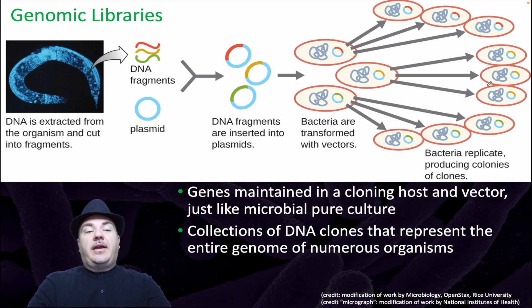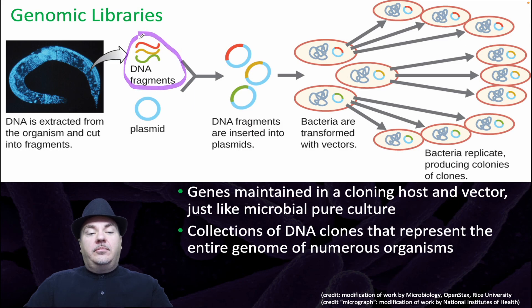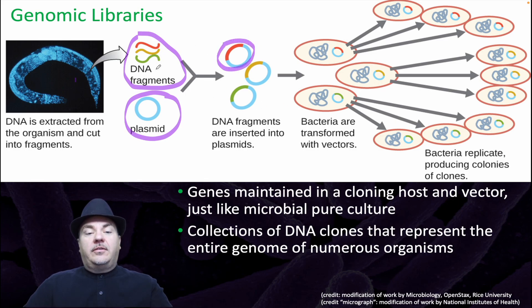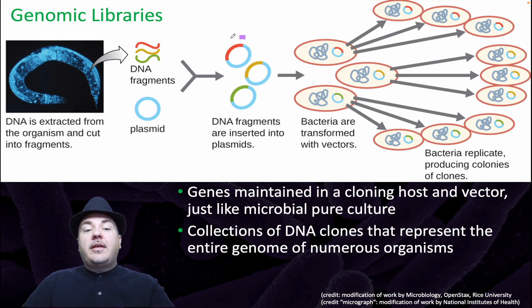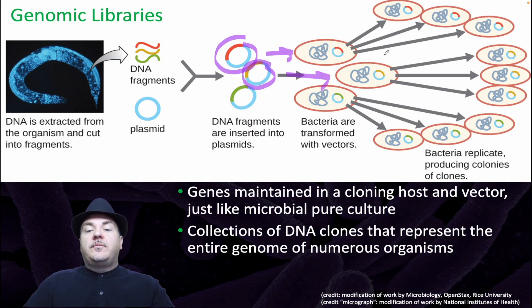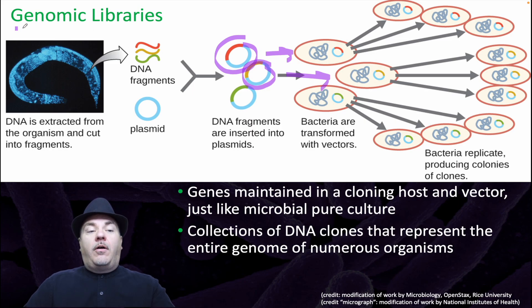For example, let's say we wanted to have a library of every gene in the nematode C. elegans. We extract the DNA from that organism, take plasmids, and cut them with the same restriction endonucleases. That inserts the genes from this organism into the plasmid. You then take these plasmids, put them into bacteria cells, and grow them as individual colonies. Each colony will then have one gene from C. elegans growing in those bacteria. If you do this enough, you can have the entire genome — all of the genes from this organism — now growing in bacteria colonies.